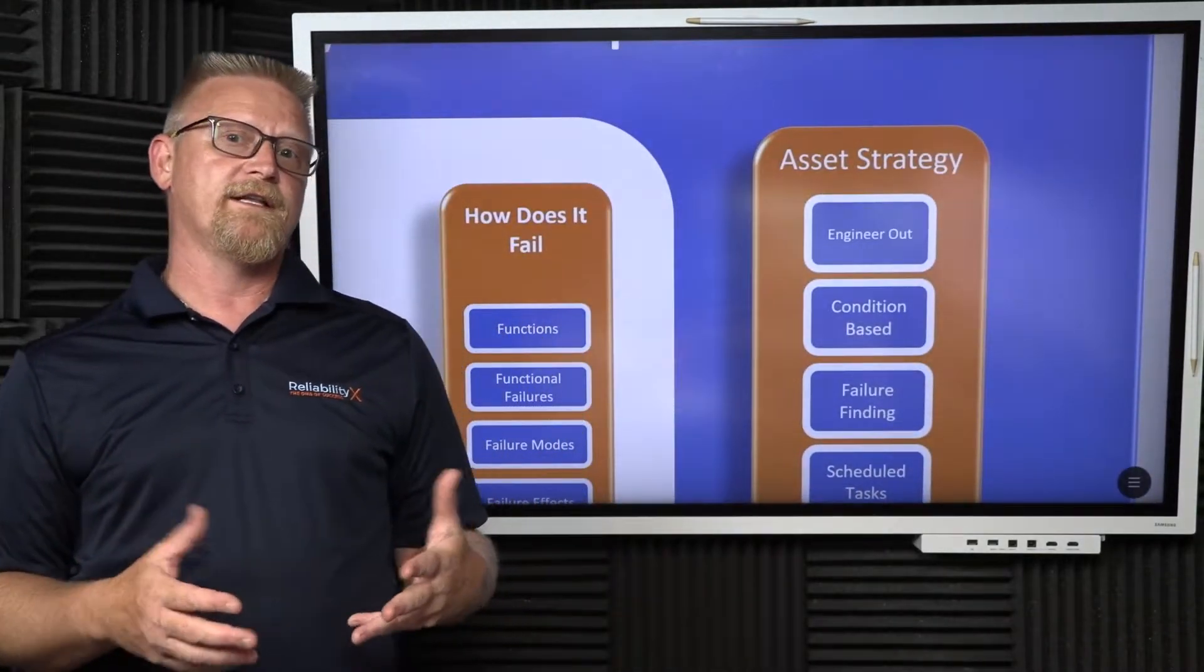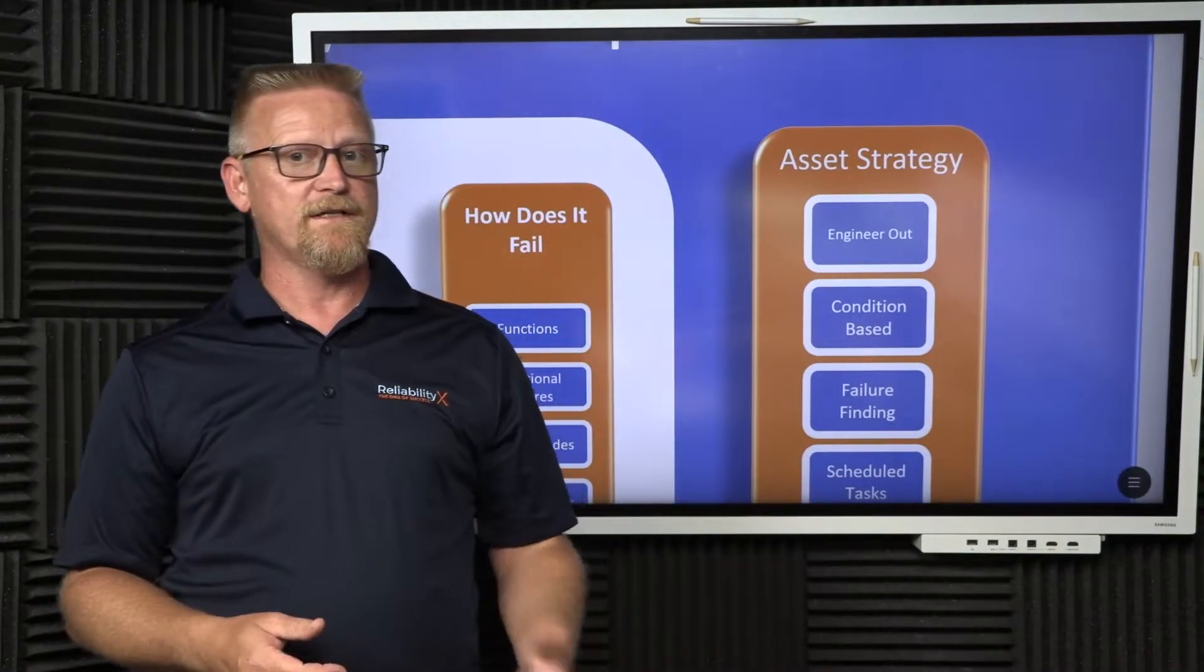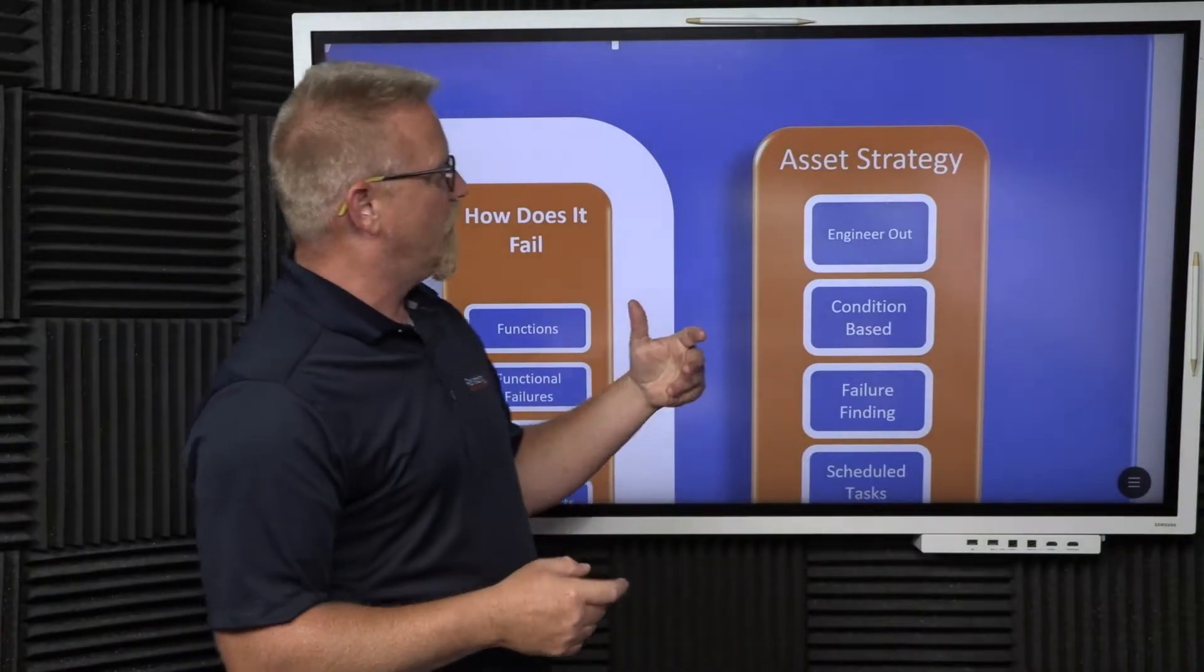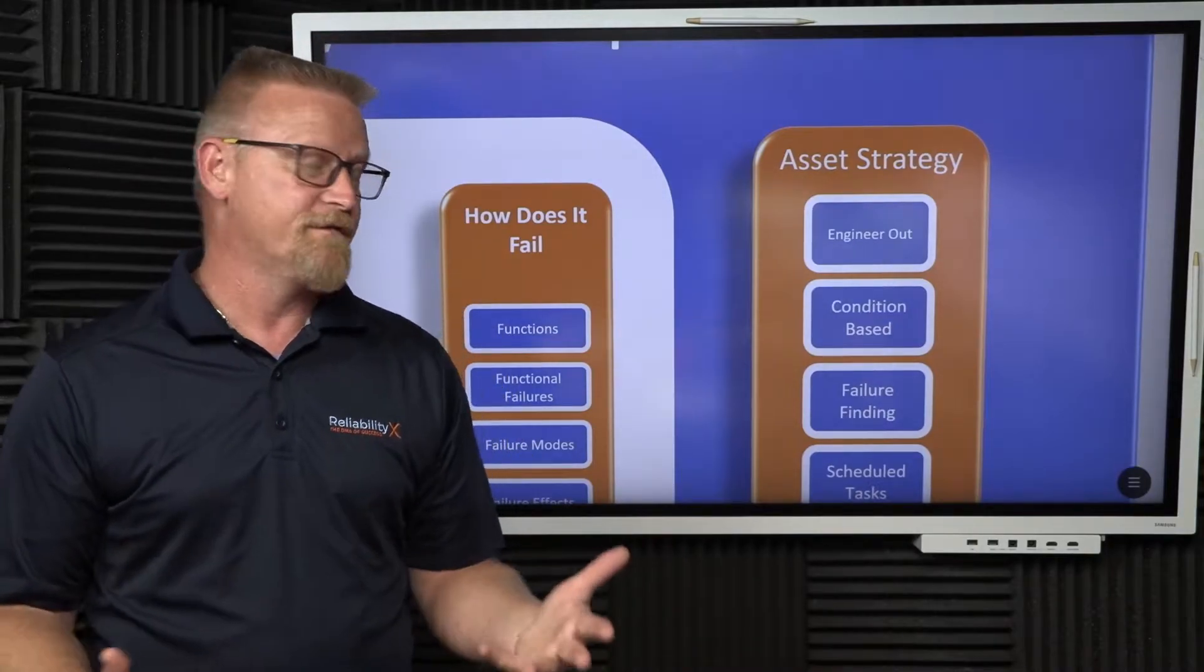And then we can develop our asset strategy. Based on that risk priority number, we sort those failure modes from highest number to lowest number, and we want to go after the high numbers and make them lower. So what we do is first we determine whether or not we can engineer out the problem. Can we get rid of the failure mode?